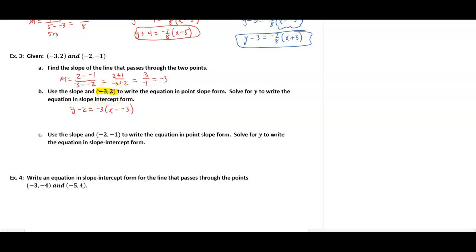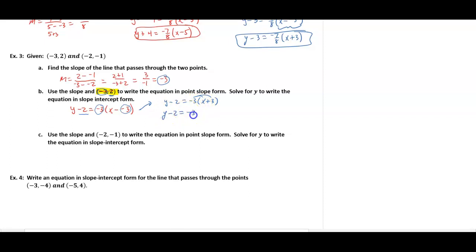Rewriting: y minus 2 equals -3 times (x plus 3), since subtracting a negative becomes addition. Now distribute the -3: -3 times x is -3x, and -3 times 3 is -9. So y minus 2 equals -3x minus 9. Add 2 to both sides: y equals -3x minus 7.